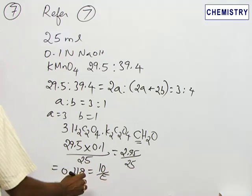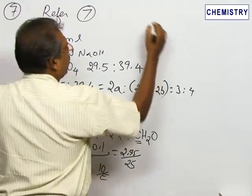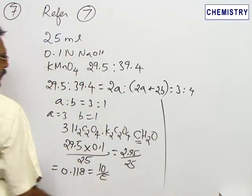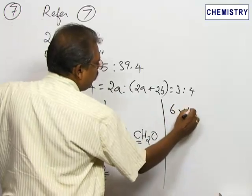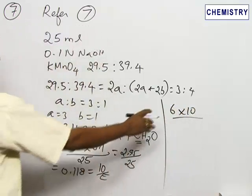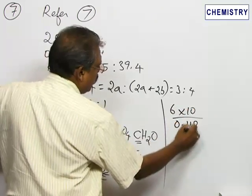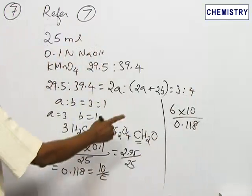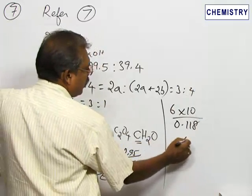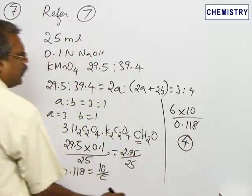That is 10 by E. We are going to calculate the equivalence and the molar mass. If we calculate the molar mass, the problem is solved. Divided by 0.118, and on solving we get the ratio is 4.